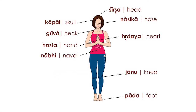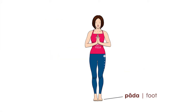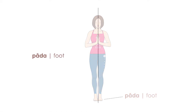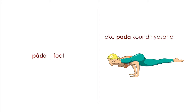Welcome to the second episode of Sanskrit lessons for yoga instructors and practitioners. Today we're going to look at a few body parts. We begin with the feet: Pada means foot, with a long 'a'. An example is Ekapada Kaundiniasana — the name of a yoga pose. In the previous class we established that Eka means one, so Ekapada is one foot.